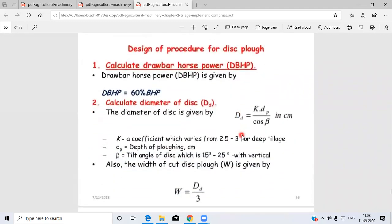Design Procedure of Disc Plough includes the following points. First, calculate drawbar horsepower. It is determined by the formula: drawbar horsepower equals 60% of brake horsepower.